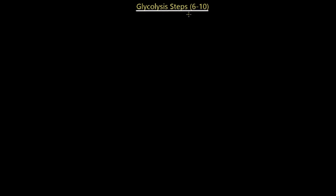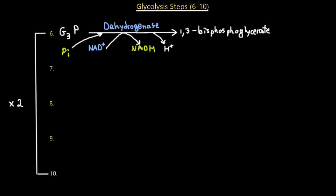Now we look at glycolysis steps six through ten, the energy-producing steps. Note that all of these reactions happen twice, because we have two G3P molecules. In step six, G3P undergoes the first redox reaction of glycolysis. The enzyme dehydrogenase catalyzes this reaction: G3P is oxidized into 1,3-bisphosphoglycerate, NAD⁺ is reduced to NADH, a proton is released, and an inorganic phosphate is added to the molecule.